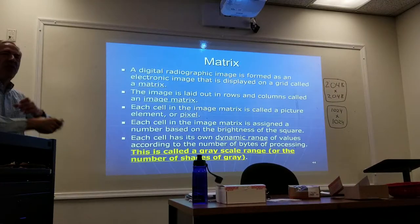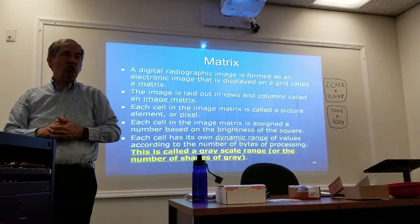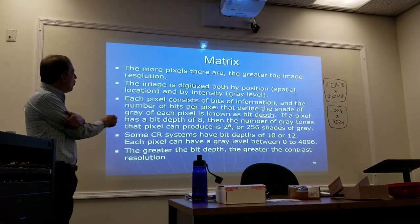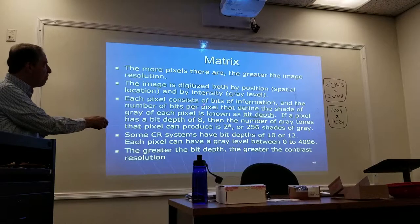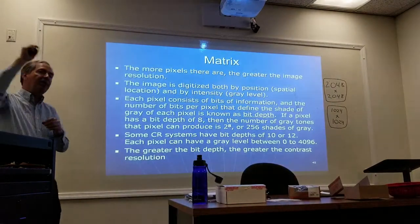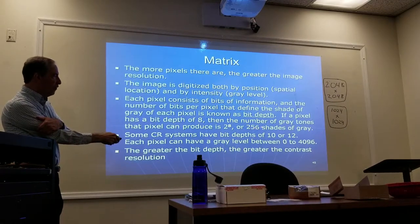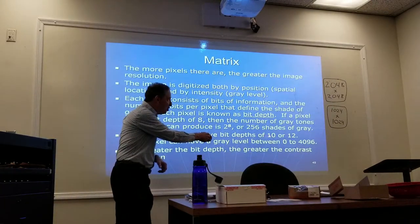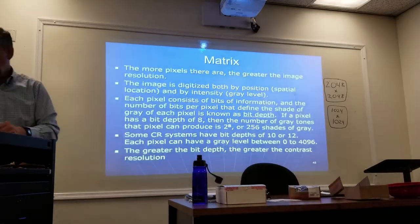Each pixel has its own brightness number and its own dynamic range — that's called the grayscale range, or the number of shades of gray. The more pixels there are, the greater the image resolution. Each pixel consists of bits of information, and the number of bits per pixel that defines the shade of gray is known as bit depth. Bit depth is indicated as an exponent: a bit depth of 8 means 2 to the 8th, which equals 256 shades of gray.